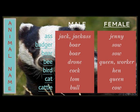A male bee is a drone; the female is a queen or worker. A male bird is called a cock, a female bird a hen. A male cat is a tom, a female cat is a queen.